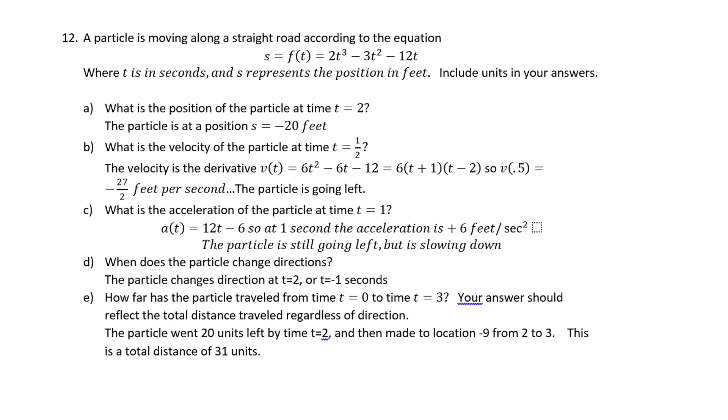Number 12 is dealing with velocity, acceleration and so on and so forth. There are five parts. Each one is worth two points, and the unit is worth a half point each time. The signs matter, so the position is at minus 20 feet per a. The velocity is also negative. It is minus 27 over 2 feet per second. Those are the units. The acceleration is going to be plus 6 feet per second squared.